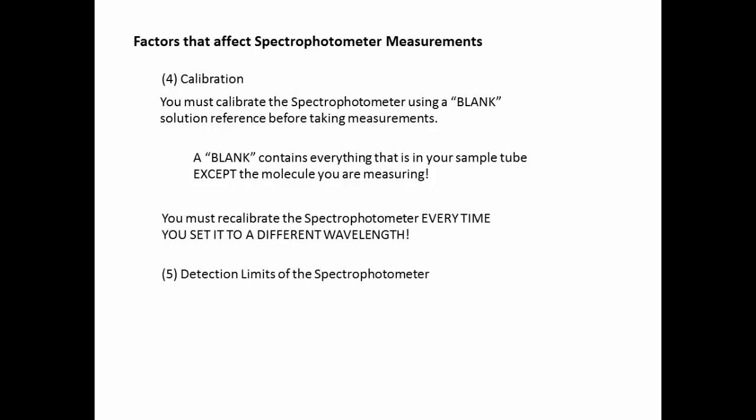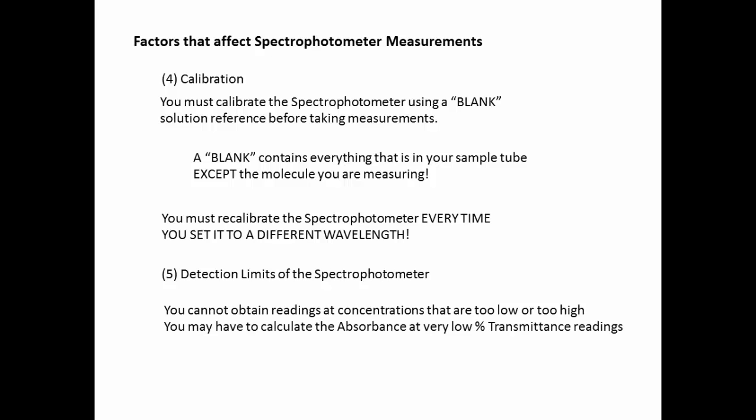Number five is that there are detection limits on the spectrophotometer. You cannot obtain readings at concentrations that are too low or too high. In some cases, the machine will still be able to read transmittance values, but when you ask it to report an absorbance, you'll just get a blinking number or an error or something that can't give you a reading or value. In those cases, you have to actually calculate the absorbance when the percent transmittance readings are very, very low. Refer to the handout to look at the formula for how to do this.